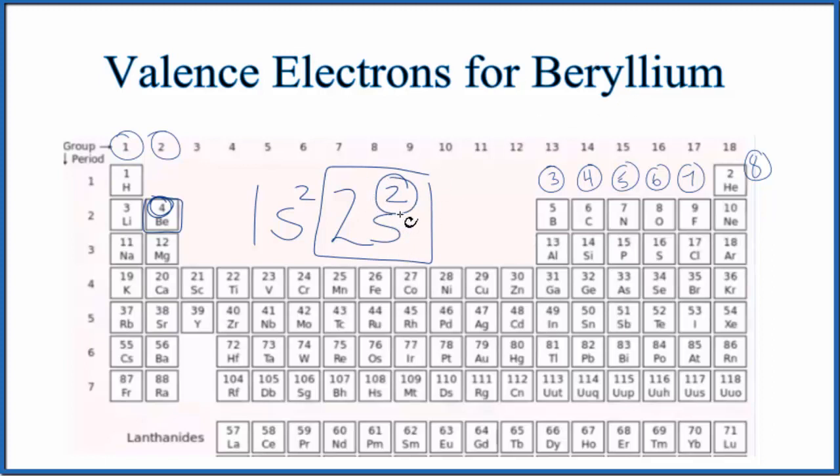So that's how you figure out the number of valence electrons for beryllium. This is Dr. B, and thanks for watching.